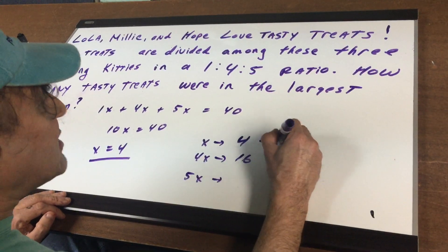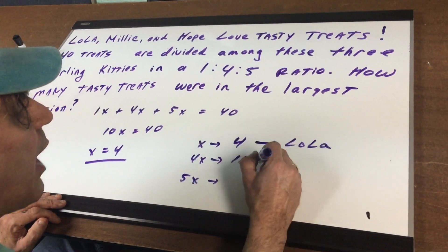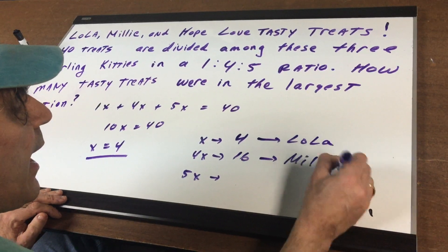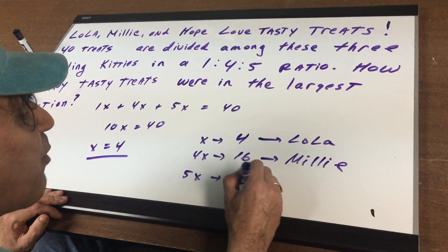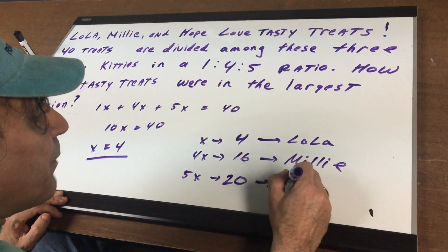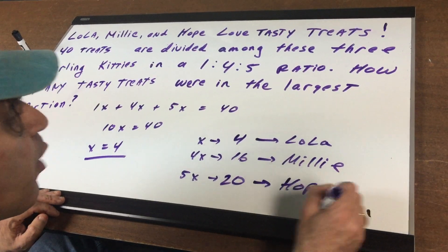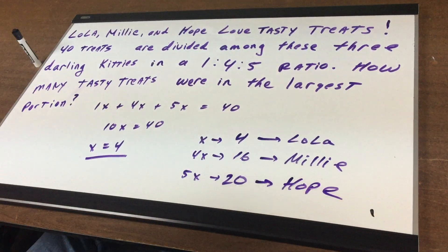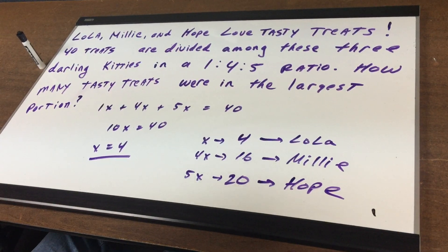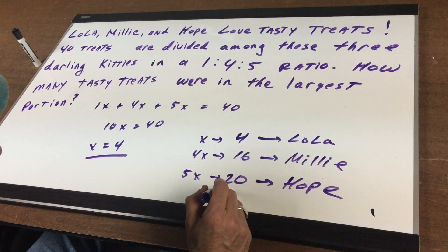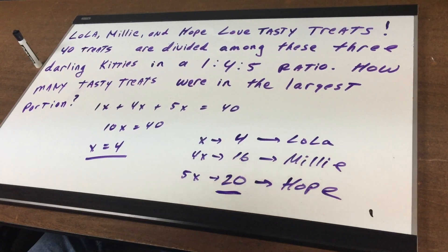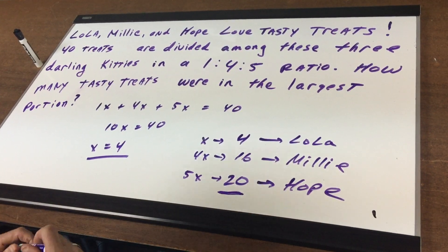So the 4x portion would be 16 — let's say that was for Lola. This portion was for Millie. And the largest portion, which would be 5 times 4, would be 20 — and that would be for Hope. So the largest portion would be 20 tasty treats for a cat named Hope.